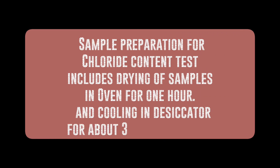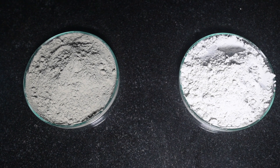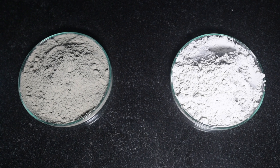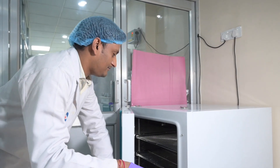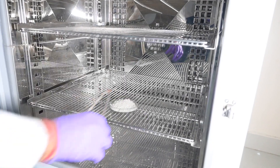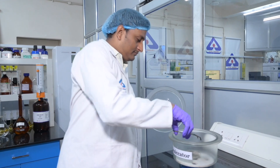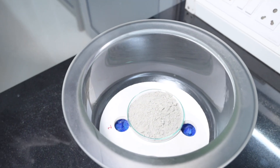Sample preparation for the chloride content test includes drying of samples in the oven for 1 hour and cooling in a desiccator for about 30 to 40 minutes. Keep about 10 grams of sample in a large glass petri dish and spread it evenly into a thin layer. Put it in the oven maintained at 105 plus or minus 5 degrees Celsius for 1 hour to remove any superficially adsorbed moisture. Take it out, keep in a desiccator for about 30 to 40 minutes, and cool it to room temperature.